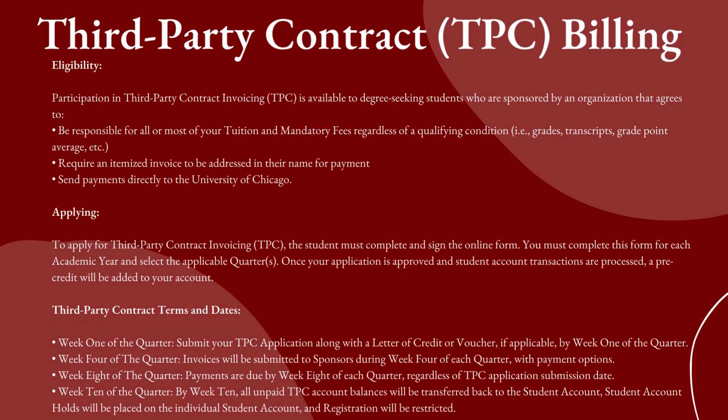Eligibility for participation in third-party contract invoicing is available to degree-seeking students who are sponsored by an organization that agrees to be responsible for all or most of your tuition and mandatory fees, regardless of any qualifying conditions such as grades, transcripts, grade point average, etc. It requires an itemized invoice to be addressed in the name of the payer, and payments sent directly to the University of Chicago.